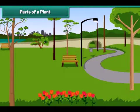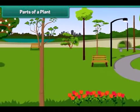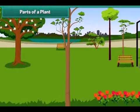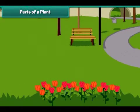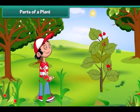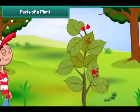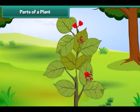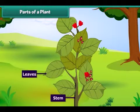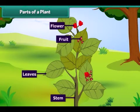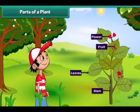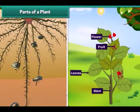Dear friends, as we can see around us, there are a lot of varieties of plants and trees. They all are green in colour and provide ease to our eyes. But have you ever observed a plant closely? You can see some of its major parts such as stem, leaves, flowers and fruits above the ground. But do you know that some part is also hidden under the ground? This part is called root.